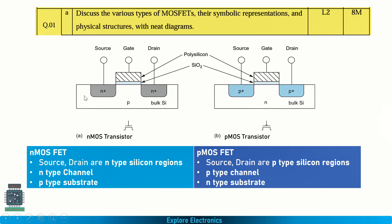In an NMOS transistor, the P substrate acts as a substrate. Inside the P substrate we create two N regions, giving two N+ regions acting as source and drain. Above that we have an SiO2 layer, and above that polysilicon — that is the gate. In a PMOS transistor, the difference is that the substrate is N-type silicon and the source and drain are P-type silicon. The SiO2 layer and polysilicon gate remain the same.